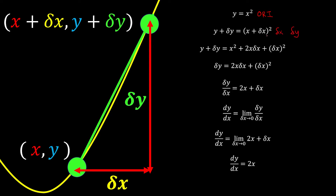After we apply the small changes, we expand as usual for the quadratic equation. So after we expand, this is the new equation, which we call the second equation, and this is our first equation.